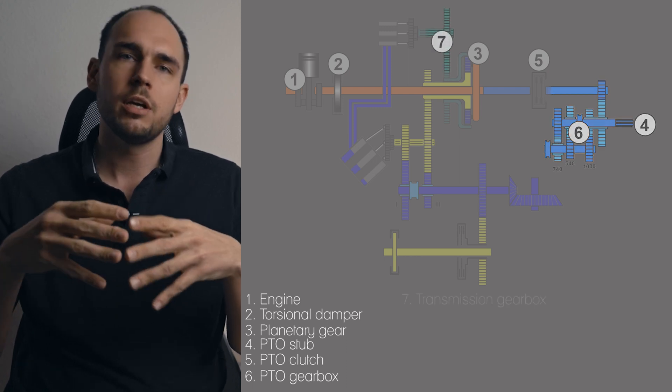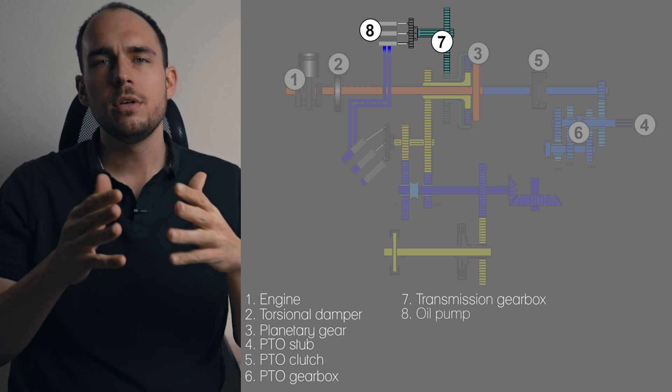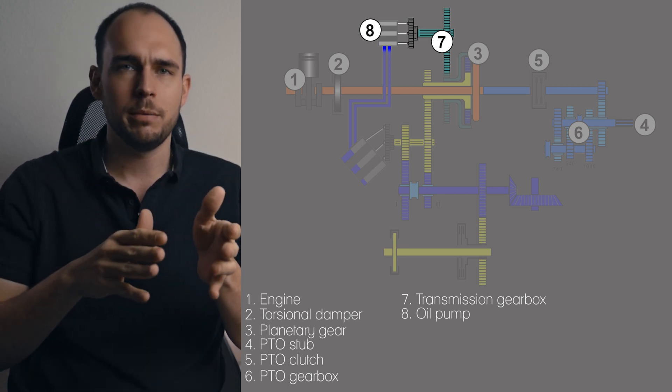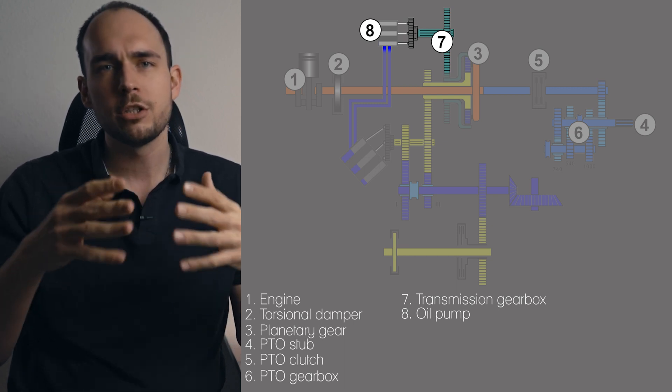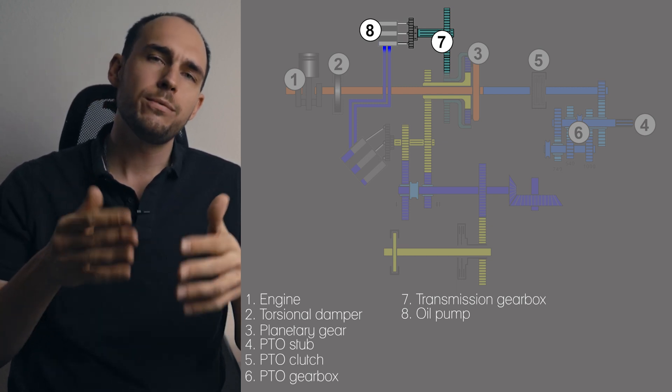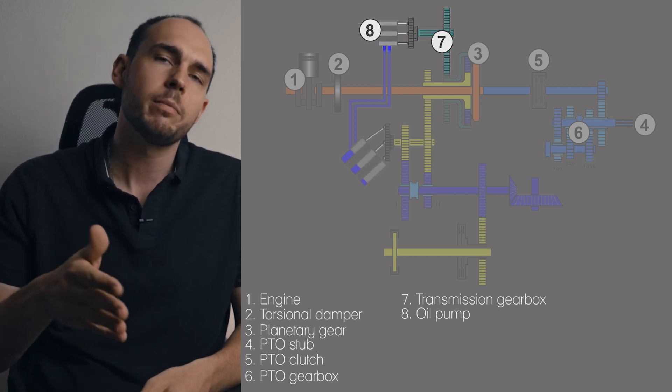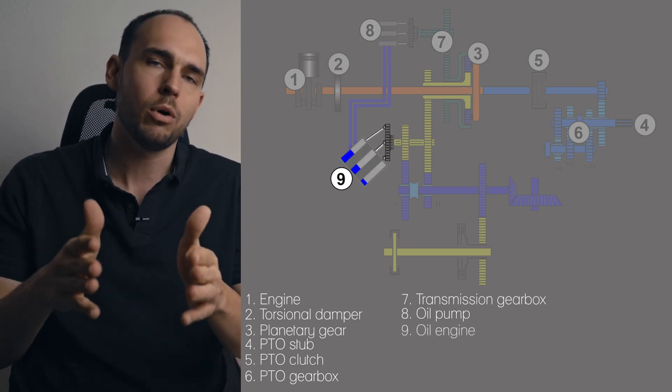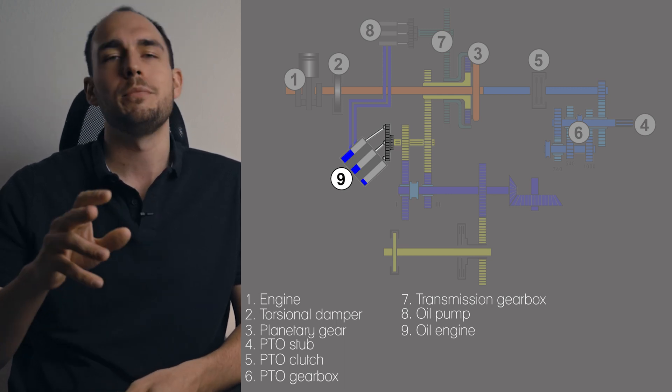If we go up from the planetary gear we have a transmission gear coupled with a hydro or oil pump. This pump is an axial piston pump, meaning the further I swing the pump out the more oil it delivers and the direction in which the pump is swung out influences the direction in which the oil flows. So the direction in which my downstream hydro oil motor rotates. This oil motor can also swing out again but we will come to that in a moment.